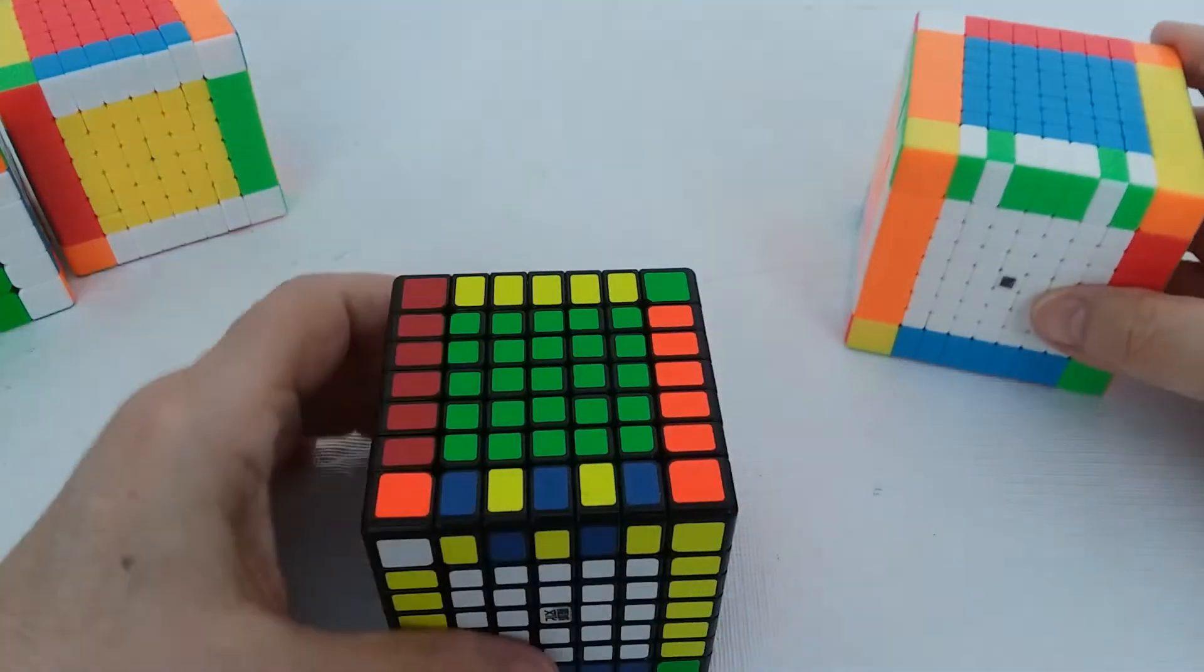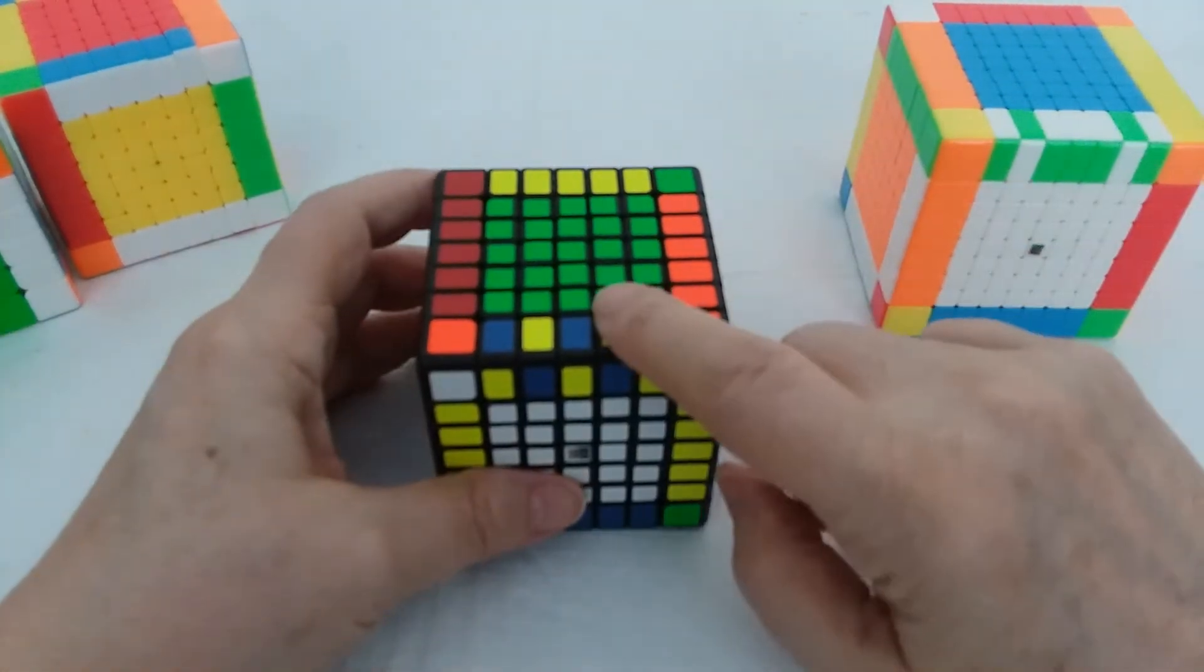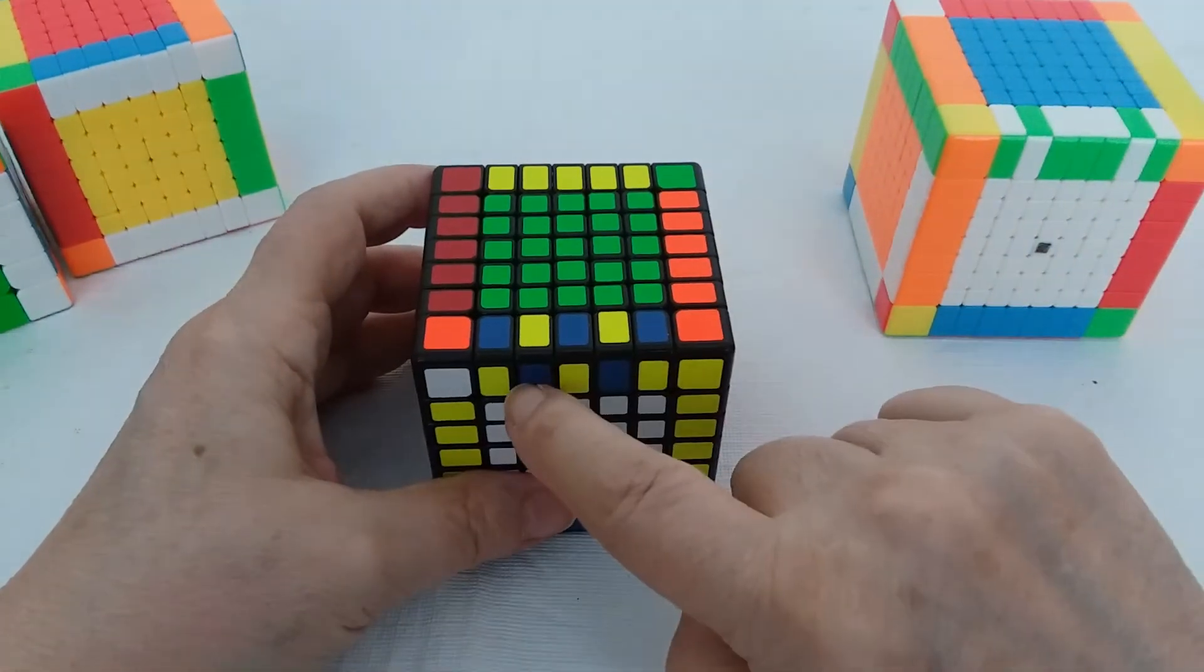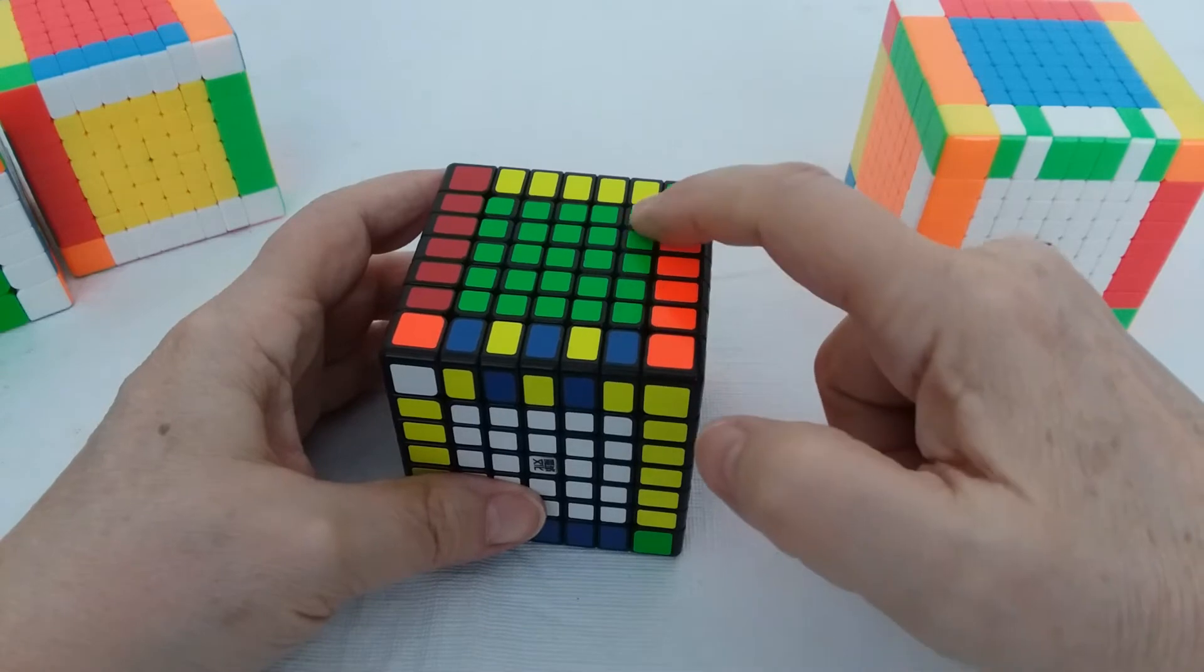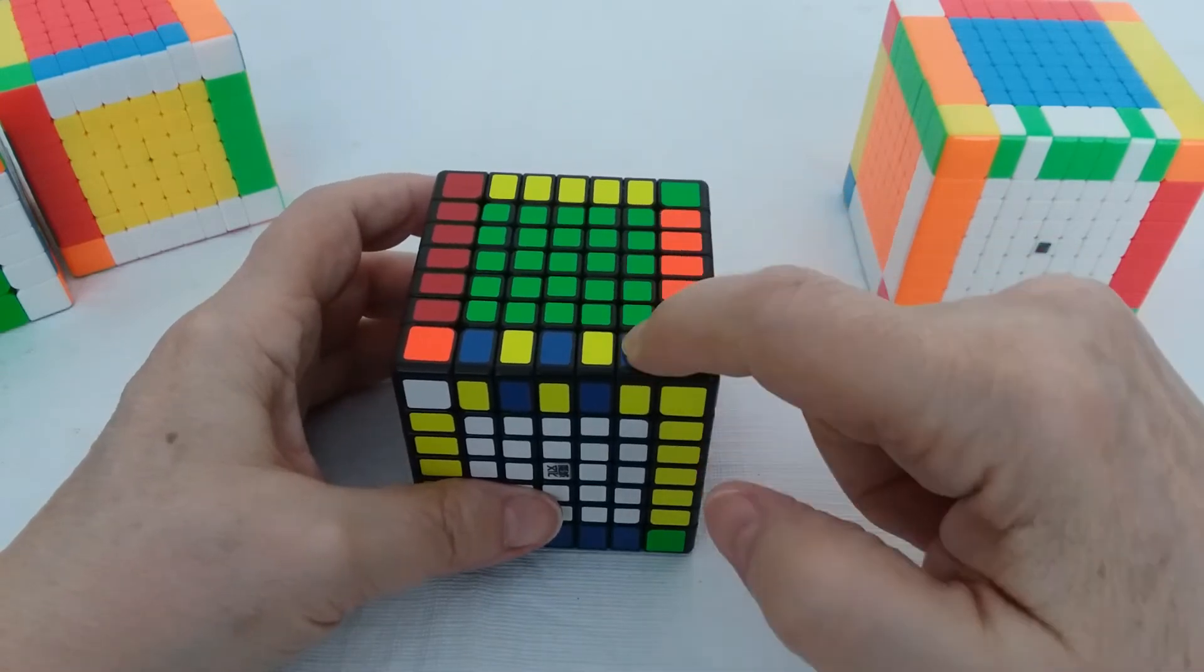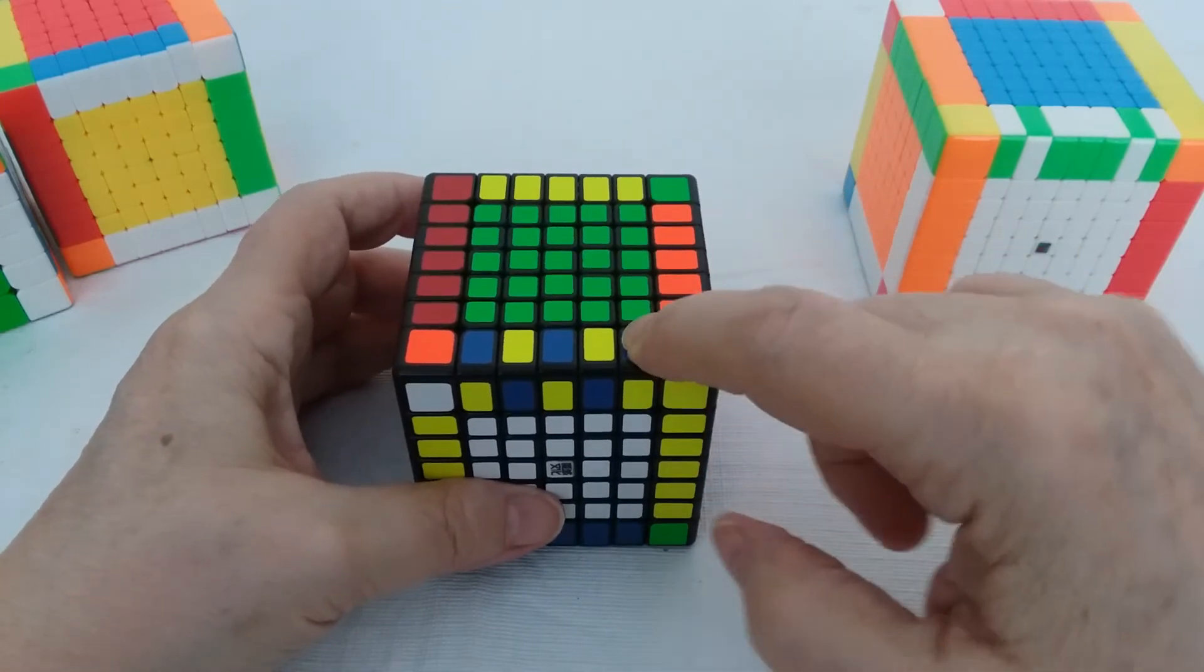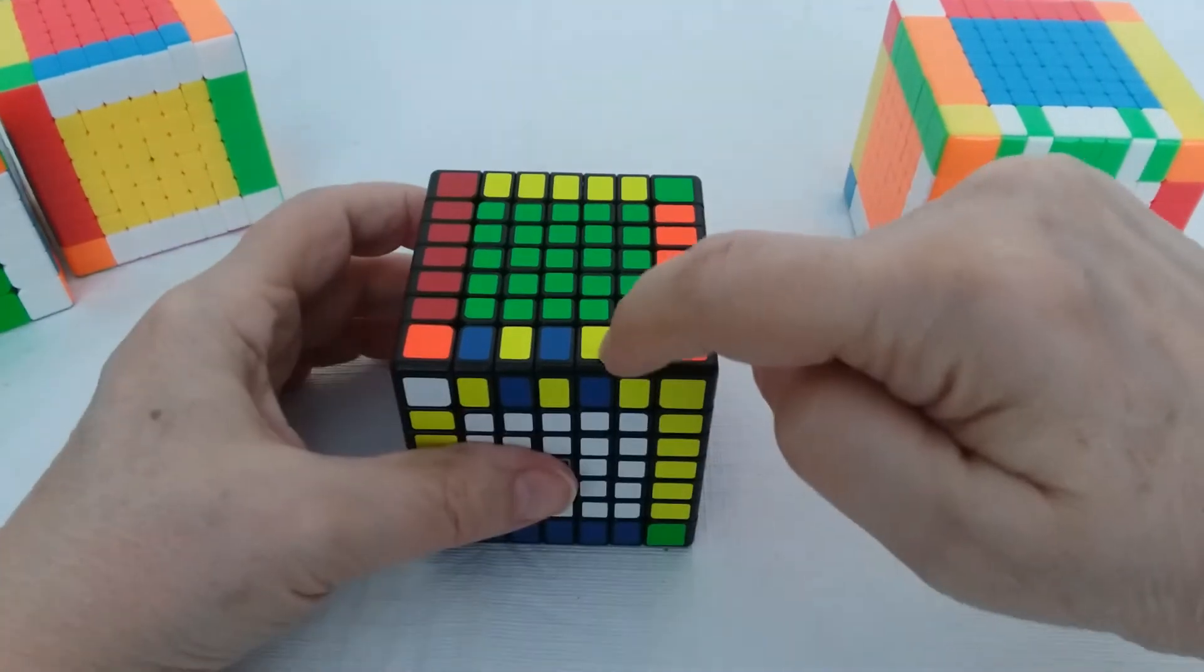And now for the two trickier ones. For the 7x7, I have it so I want to flip these two. In this case we can't move this row because that will flip it and we don't want to.